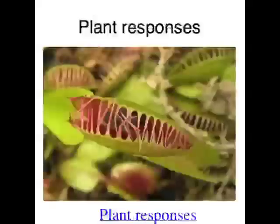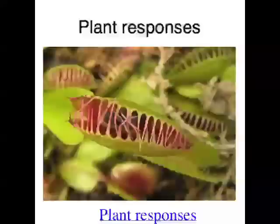If you look at a plant, you would think that it doesn't really do much, but they actually respond to their environment quite a bit. For example, they respond to the amount of light in their environment. I've already talked about phototropism and the way that plants grow towards the light, but plants also respond to the amount of light and the amount of dark — and this affects the way that a plant flowers.